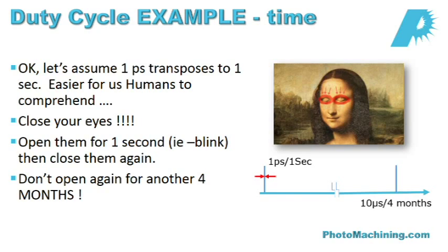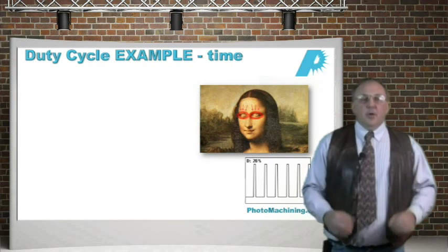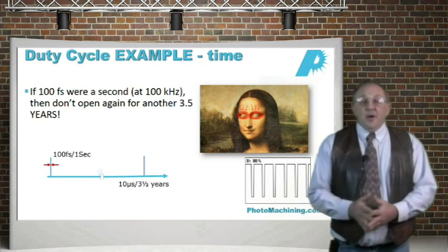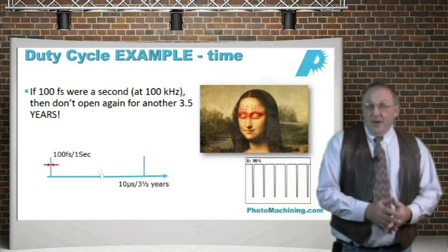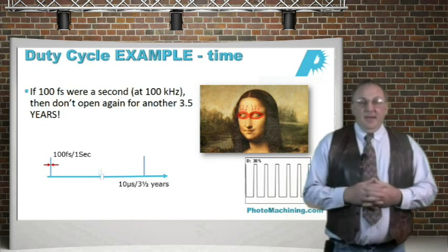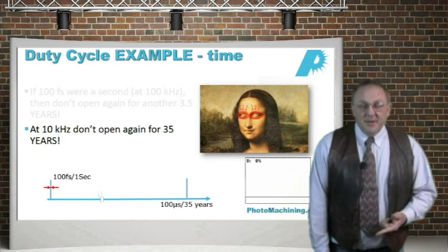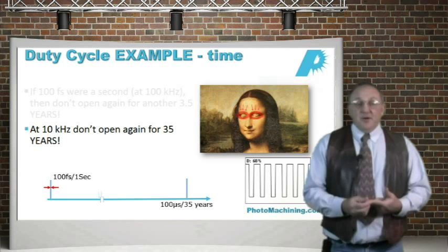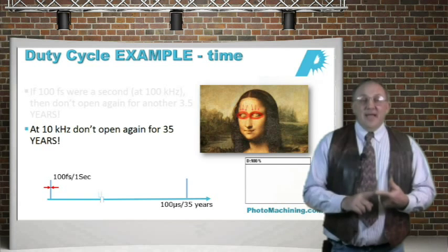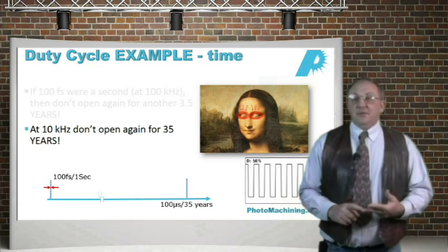The answer is four months. So with a one-picosecond laser running at 100 kilohertz, transposing the coordinate system, we open our eyes for one second and keep them closed for four months. The point is we get a very large burst of high-intensity light in a very short time, then nothing for a long period — enough time for molecular relaxation and so on. For a 100-femtosecond laser, if 100 femtoseconds equals one second, we don't open our eyes for another 3.5 years. And running at 10 kilohertz instead of 100 kilohertz, we open our eyes for one second and keep them closed for 35 years.